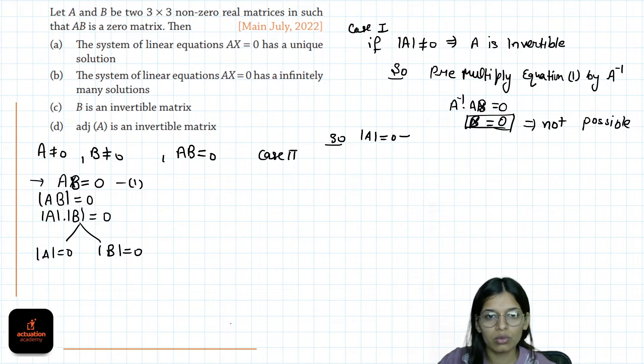Similarly, Case 2: If determinant of B is non-zero, this will imply B is invertible. So AB into B inverse will be 0.